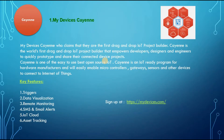My favorite open source or free platform is KN. KN is the world's first drag-and-drop IoT project builder that empowers developers, designers, and engineers to quickly prototype and share their connected device projects. KN easily enables microcontrollers, gateways, sensors, and other devices to connect to Internet of Things. KN is one of the easy-to-use best open source IoT platforms.